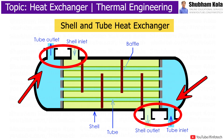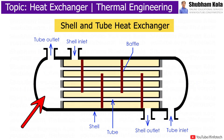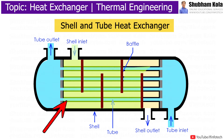Each medium has one entry and one discharge point. The tube side medium is selected for high pressure fluid. One fluid flows over the outside of tubes while the second fluid flows through the tubes. Heat is exchanged between the two fluids because they are in thermal contact with each other. The two fluids do not mix as the wall of tubes prevents this, so indirect cooling occurs.